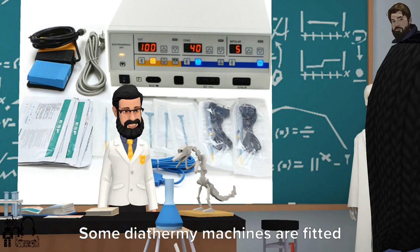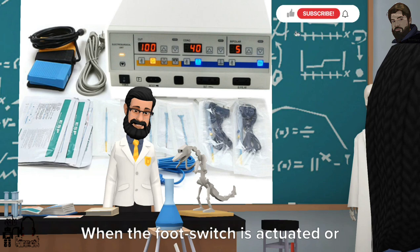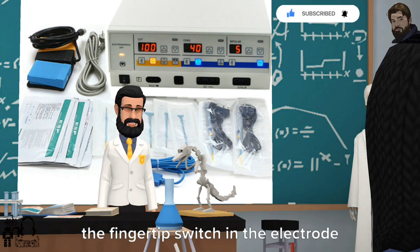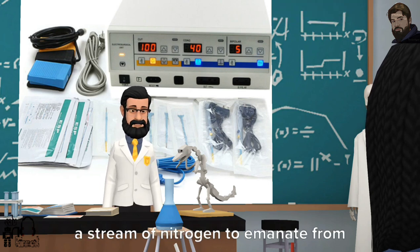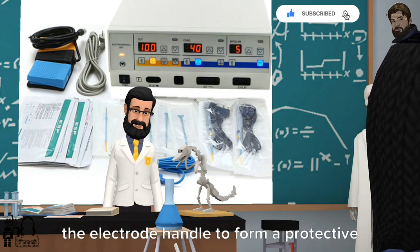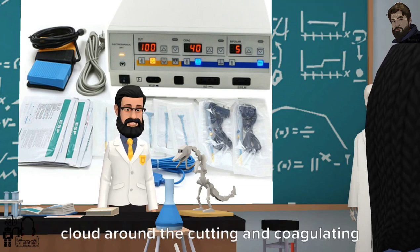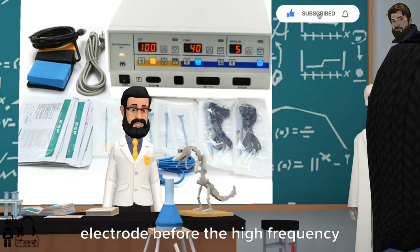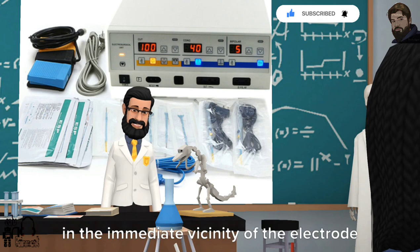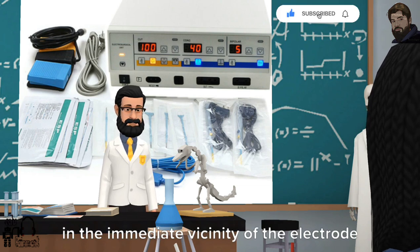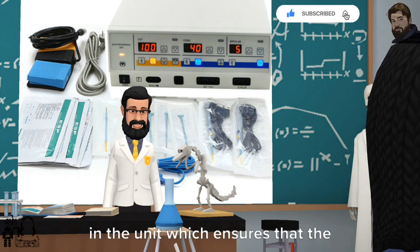The foot switches of the electrosurgical unit should be explosion-proof. Some diathermy machines are fitted with automatic explosion protection devices. When the foot switch is actuated or the fingertip switch in the electrode handle is operated, this device causes a stream of nitrogen to emanate from the electrode handle to form a protective cloud around the cutting and coagulating electrode before the high-frequency generator is switched on. Hence the explosive gas mixtures in the immediate vicinity of the electrode cannot ignite.